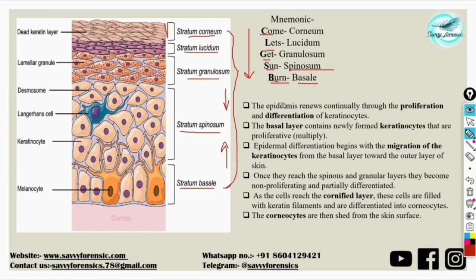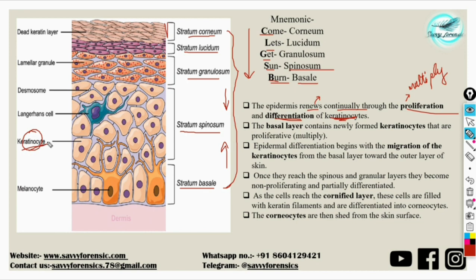Let's understand how the epidermis acts as a source of evidence for forensic investigation. The epidermal layer continually renews itself through the process of proliferation and differentiation. Proliferation means multiplication, while differentiation means cells grow from an immature unspecialized state to become mature and specialized. The most dominant cell type constituting the epidermis is the keratinocyte, which also contains keratin protein. Through proliferation and differentiation, keratinocytes renew the epidermis.